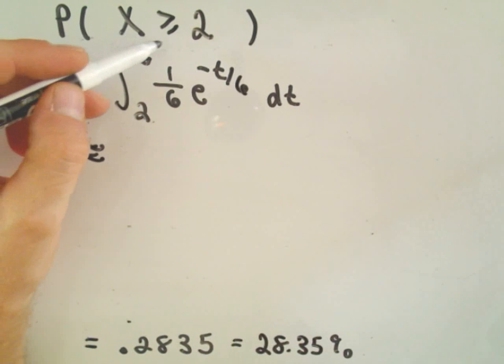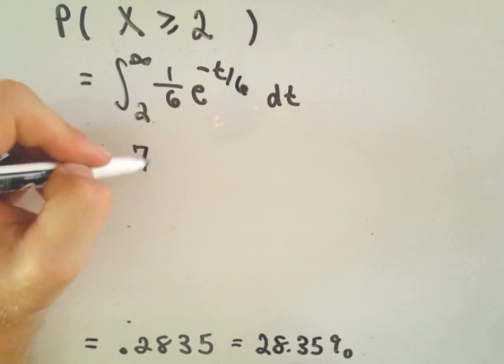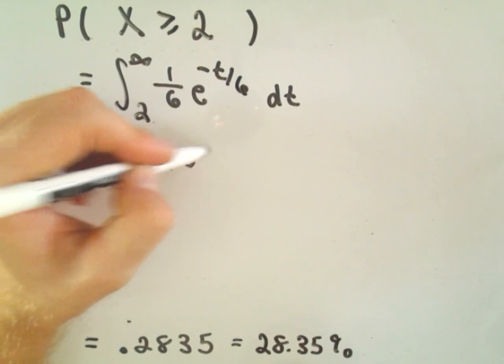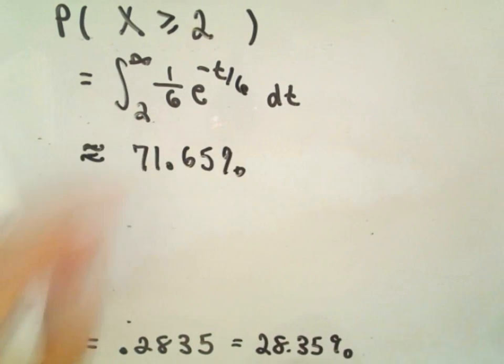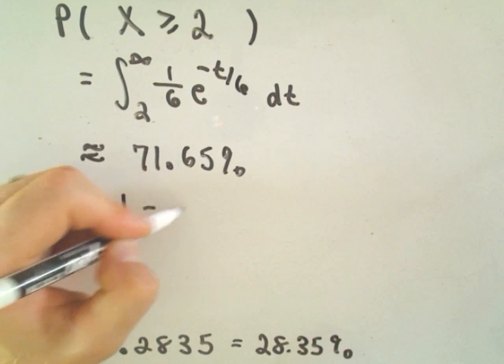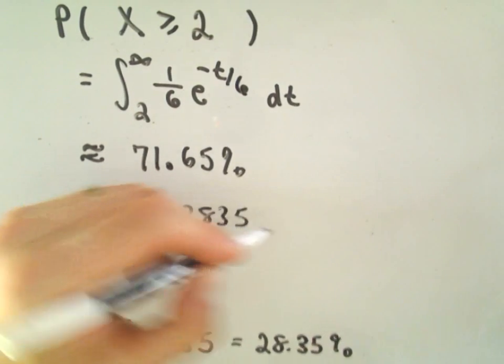well, 71.65%. Kind of the difference. And notice that's simply 1 minus .2835.